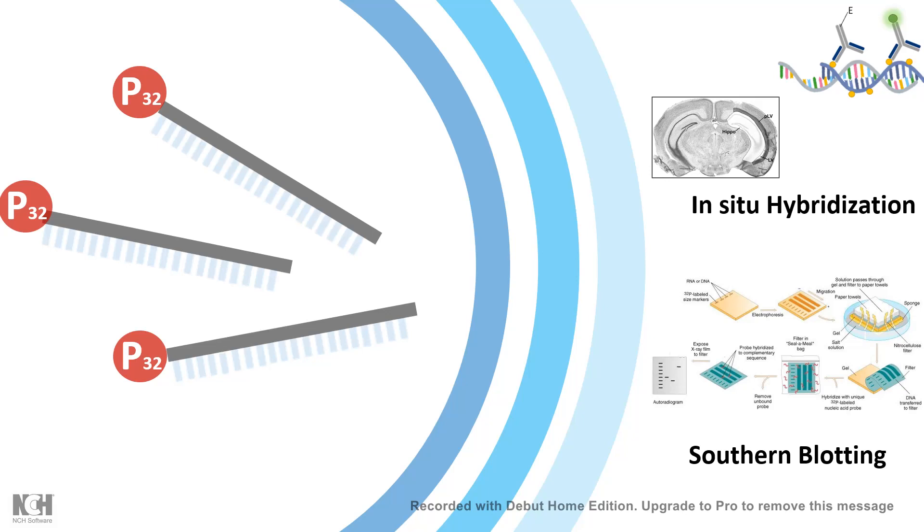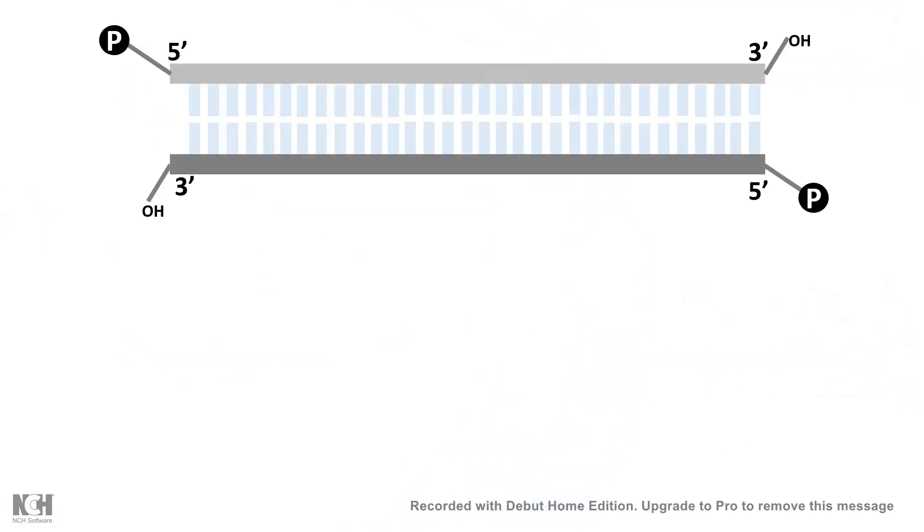In order to label that, either radiologically or by any other non-radiolabeled probe, we can use this technique. Here is our DNA region of interest which we are going to detect. We can generate the probe from this region of the DNA itself.